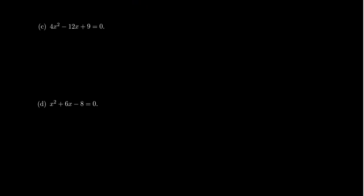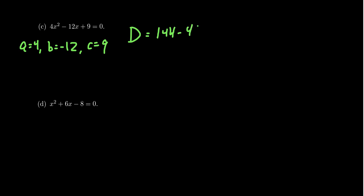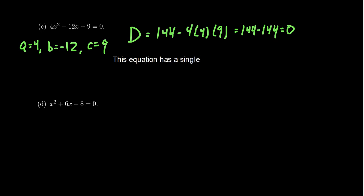Looking at the next example, 4x squared minus 12x plus 9 equals 0: A equals 4, B equals negative 12, and C equals 9. The discriminant is negative 12 squared minus 4 times 4 times 9, which is 144 minus 144, giving us 0. Because the discriminant is 0, this equation has a single real solution. In fact, this is a perfect square trinomial — it factors as the quantity 2x minus 3, squared — and you get exactly one solution from that factoring.